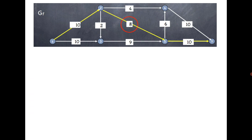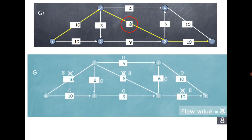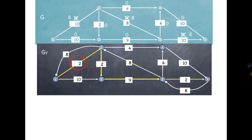After augmentation, we compute the residual graph for the new modified graph. The forward edge from S to 2 becomes 2 (remaining capacity), and a back edge from 2 to S with capacity 8 is added. Similarly, there is an edge from 5 to 2 with capacity 8, an edge from T to 5 with capacity 8, and the forward edge to T becomes 2.